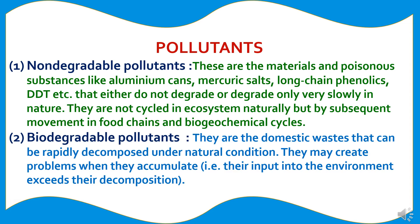Pollutants are categorized into two types. The first is non-degradable pollutants. These are materials and poisonous substances like aluminum cans, mercuric salts, long-chain phenolics, DDT, etc., that either do not degrade or degrade only very slowly in nature. They are not cycled in the ecosystem naturally, but move through food chains and biogeochemical cycles. The second is biodegradable pollutants, which are domestic wastes that can be rapidly decomposed under natural conditions, but may create problems when their input into the environment exceeds their decomposition.